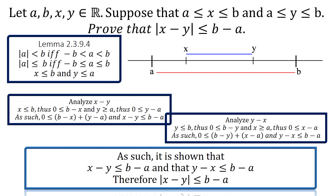Now that we can see how these inequalities work, we will look at the first proof. Let A, B, X, Y be elements of the reals. Suppose that A is less than or equal to X, which is less than or equal to B, and suppose that A is less than or equal to Y, which is less than or equal to B. Prove that the absolute value of X minus Y is less than or equal to B minus A. With this proof, we can use lemma 2.3.9.4, which allows us to use two inequalities. In the drawing, we see that we have two inequalities: X is less than or equal to B, and Y is less than or equal to A.